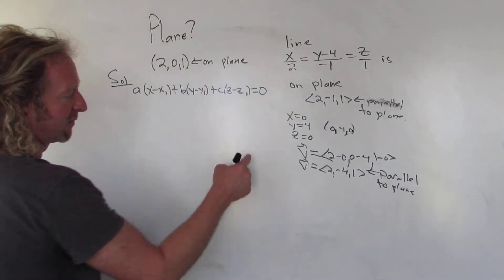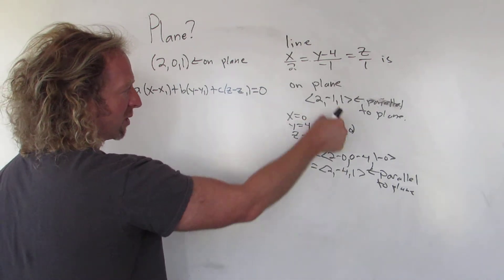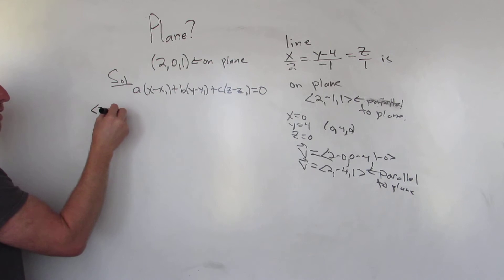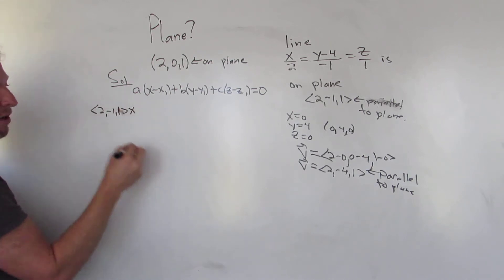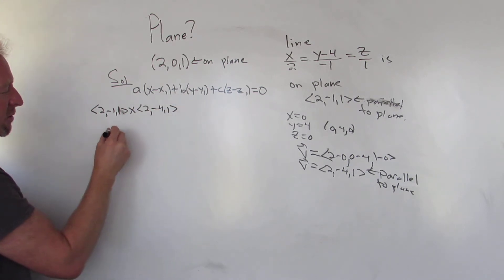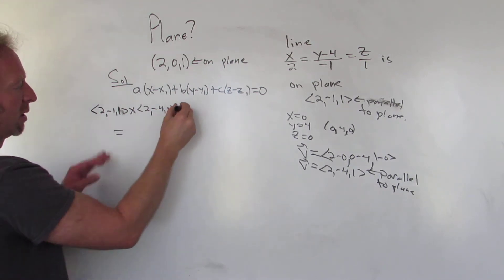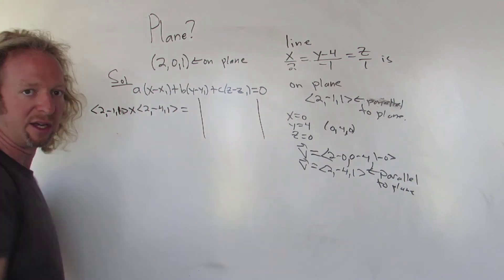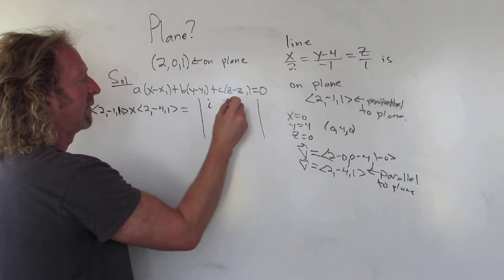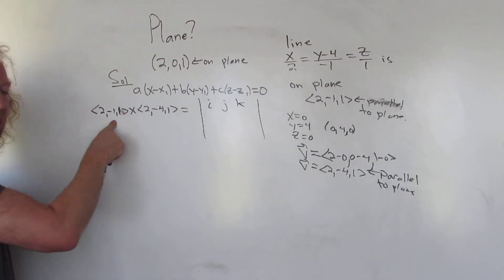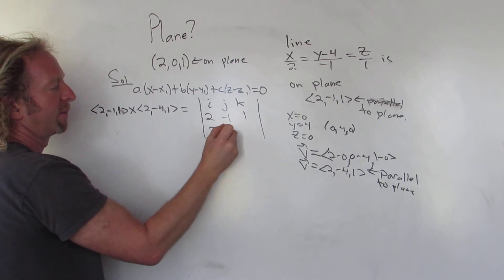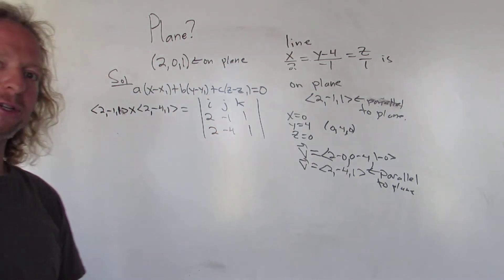Let's take the cross product of these two vectors: (2, -1, 1) cross (2, -4, 1). To find the cross product, you put these in a matrix and take the determinant. You always write i, j, k across the top. The first vector goes in the second row: 2, -1, 1. Then the second vector: 2, -4, 1. And then we take the determinant.